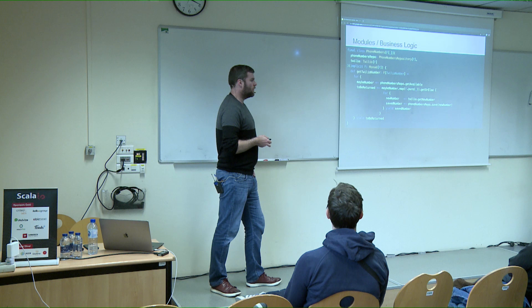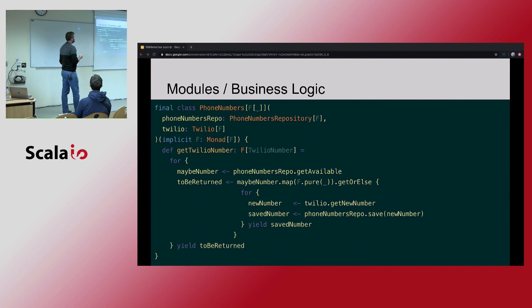The getTwilioNumber method represents what it means to our business to get a Twilio number. We check the database to see if there's a number available. If we get one, we return the one from the database. But if we don't get one, we use the Twilio interface to get a new number, save it, and then return the saved number.